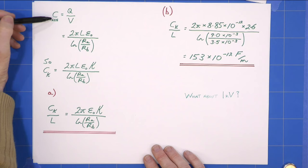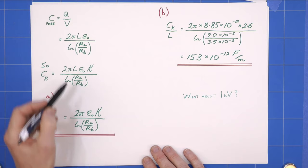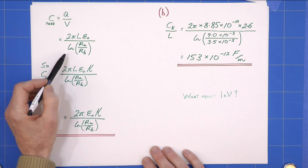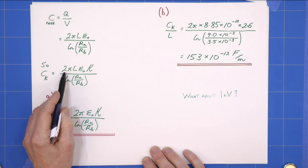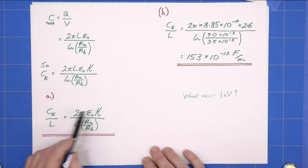Finally, almost finally, we know that C, the capacitance for the free space condition, is Q over V. We take our previous expression and simply rearrange. We get 2π L ε₀ over natural log RA over RB. So we can now introduce the dielectric, and we know that multiplies the capacitance. So it's now 2π L ε₀ κ over natural log RA over RB.